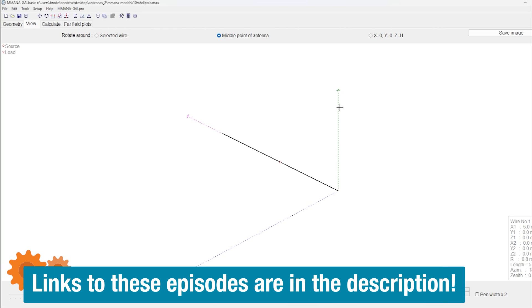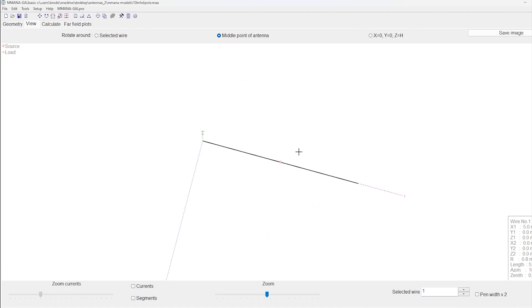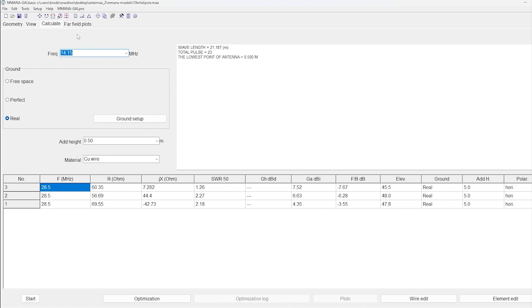So if you recall last time we had a vertically polarized dipole. This time we're going to use a horizontal dipole and that's typically what's used in the HF bands. So this gives us some directionality right off the bat whereas the vertical dipole does not.